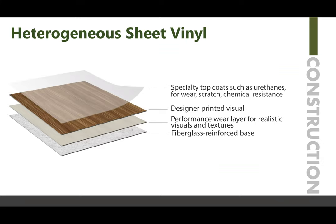Some heterogeneous products have a fiberglass-reinforced base. There is also a performance layer that gives you the visual and texture — the designer-printed visual. Technology has done great things for the vinyl industry with high-resolution digitally printed visuals, and a specialty top coat goes over that as well. This diagram is representative of one heterogeneous sheet vinyl flooring structure; some do not include the designer-printed visual layer, and there are those with and without backing cloth. The key distinction is that it is multi-layered versus homogeneous, which is a single layer with a top coat.